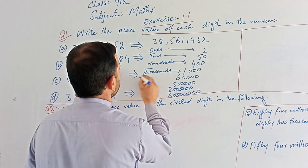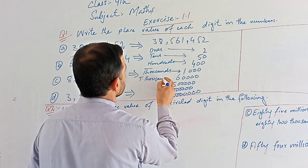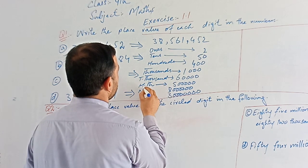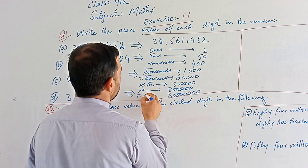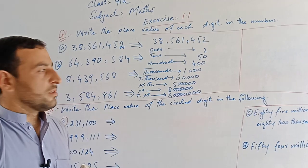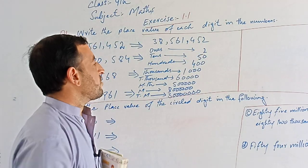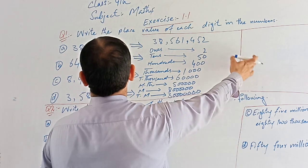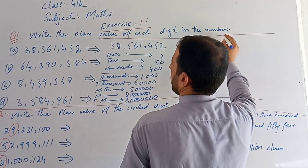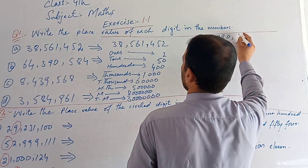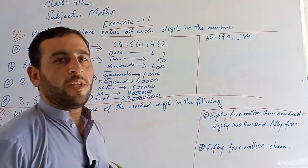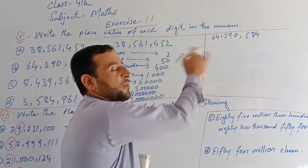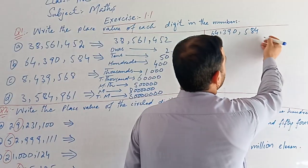One, two, three, four, five, six, seven — that's zero. One, two, three, four, five, six, seven — that's the show. Now let's go through each place value position: ones, tens, hundreds, thousands, ten thousands, hundred thousands, ten millions.